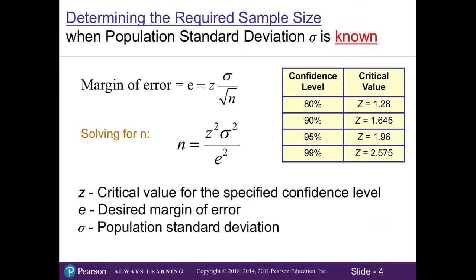In order to determine the required sample size when the population standard deviation is known, the margin of error is denoted by the letter E. To find it, we take Z times our standard error. To determine the required or minimum sample size needed to develop a good confidence interval estimate, we're going to use this formula.